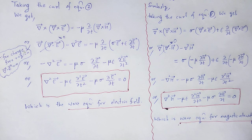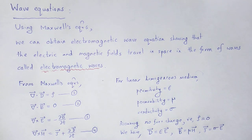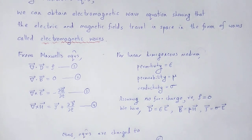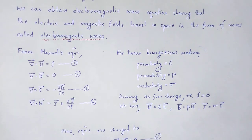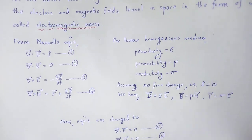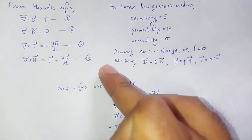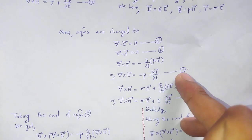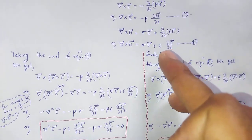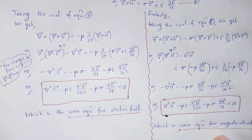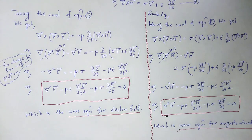So, with the help of this visual lecture we understand the idea of wave equations in electromagnetic theory. Using Maxwell's equations and the conditions for a linear homogeneous medium, we can derive the wave equation for electric field as well as magnetic field intensity. Using those conditions, the four Maxwell's equations change to another four. By taking the curl of equation number 7, we obtain the wave equation for electric field; by taking the curl of equation number 8, we obtain the wave equation for magnetic field intensity. With these useful and informative notes, let me wind up the session. Thank you.